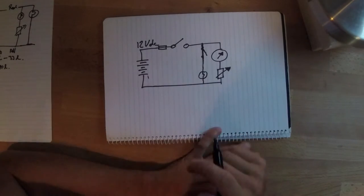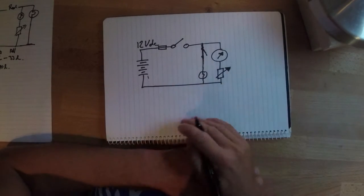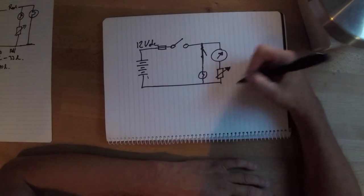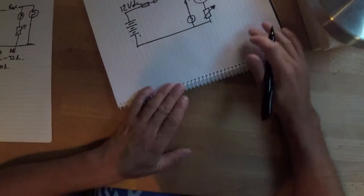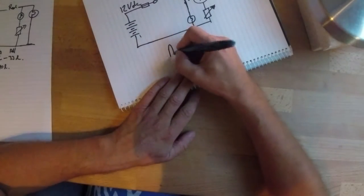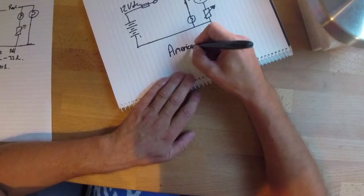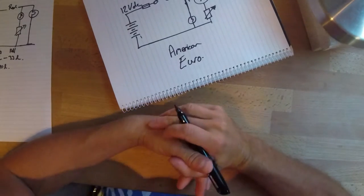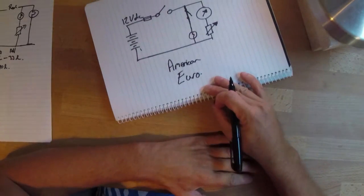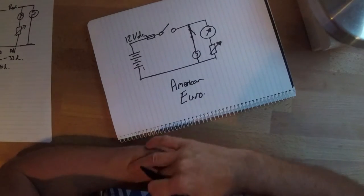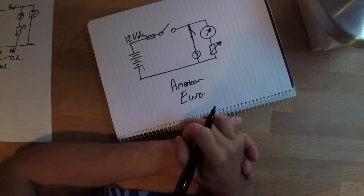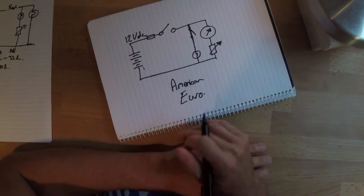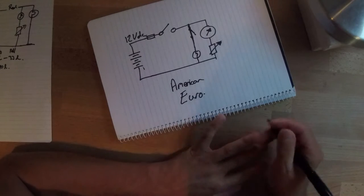So really simple, right up to the point when there are two standards. Okay, so there's two different standards used for fuel gauge circuits. That's the American version and the European version. And it's really important that we understand the difference.